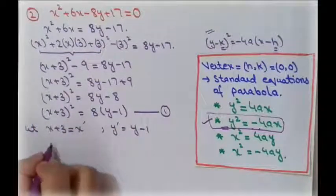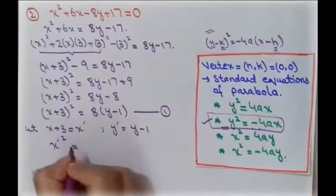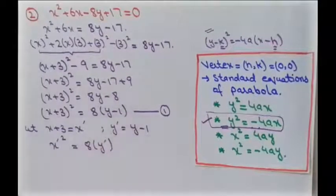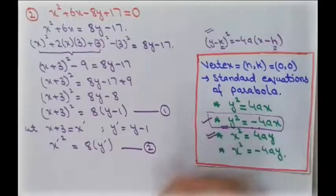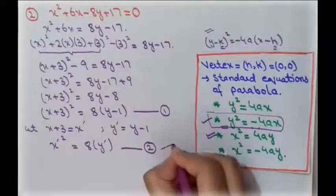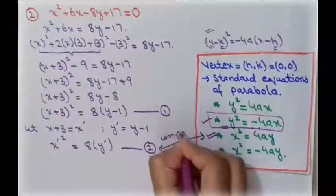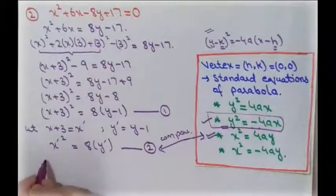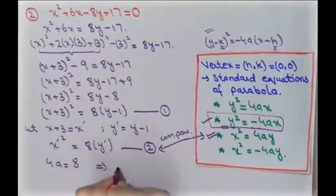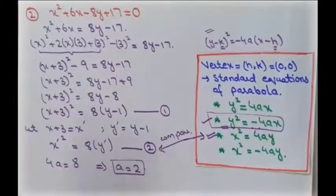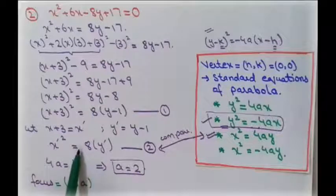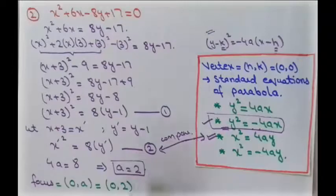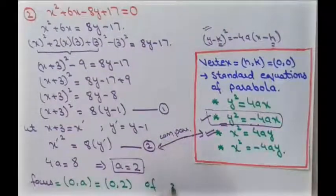The first equation becomes x′² = 8y′, which is our second equation. This matches the standard upward-opening parabola form. Comparing, 4a = 8, so a = 2. The working axis is the y-axis and the positive sign means it opens upward. The focus of the second equation is (0, a) = (0, 2).